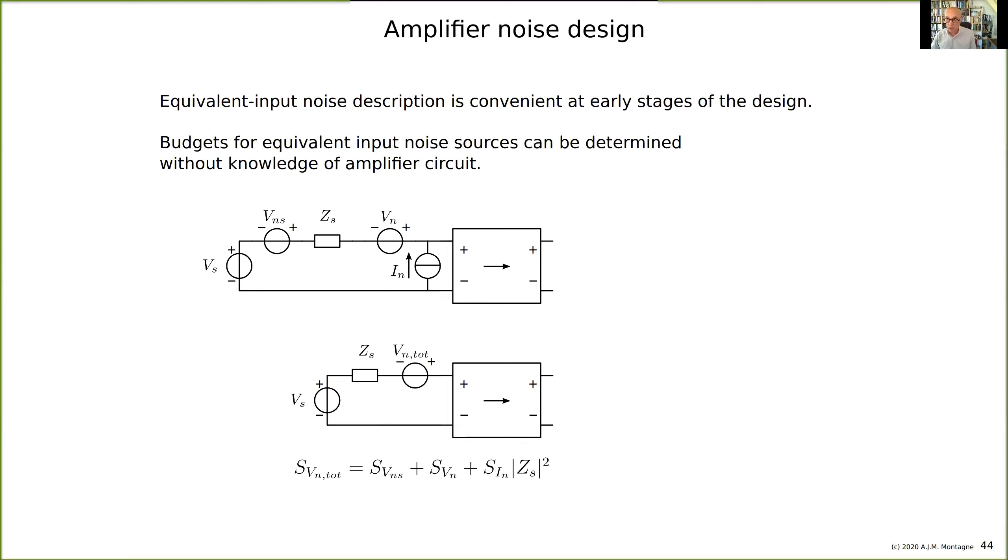If you calculate everything in spectral density, it looks like the formula below. The total noise spectral density is the spectral density of VNS (the source), the equivalent noise voltage source of the amplifier VN, and the equivalent noise current spectral density of the amplifier IN times the squared magnitude of the source impedance.